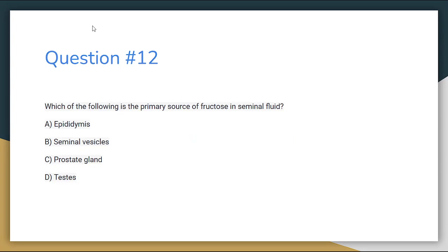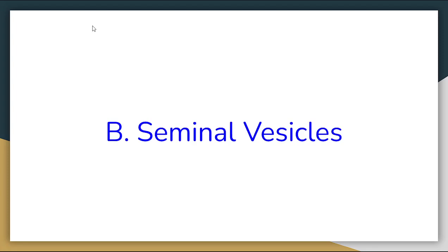Number 12. Which of the following is the primary source of fructose in seminal fluid? Letter A: Epididymis. Letter B: Seminal vesicles. Letter C: Prostate gland. Or letter D: Testes. The correct answer for number 12 is letter B, Seminal vesicles.